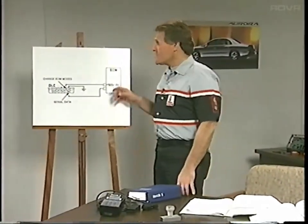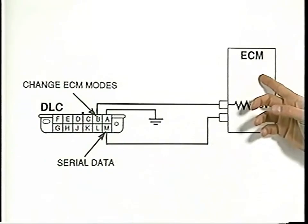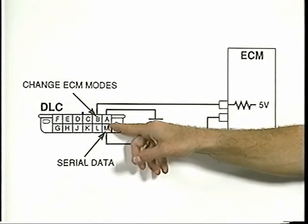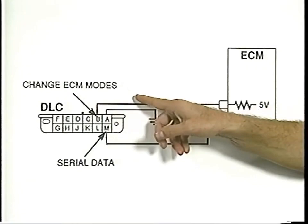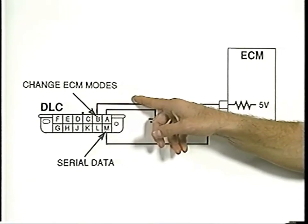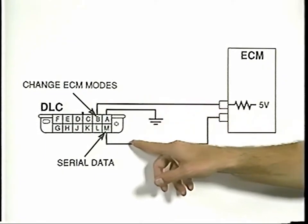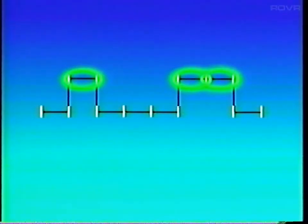Hi, I'm Jim Scopolitas. To start our look at data lines, let's do a quick review from the beginning. In 1985, we began to use the TEC-1 to read serial data from the ECM or PCM through Terminal M of the data link connector, which used to be called the ALDL, and through Terminal B to shift the PCM into various modes for diagnostic testing. Serial data moves through this line as a series of square waves, and in the systems we've used so far, all signals last for the same specific length of time.